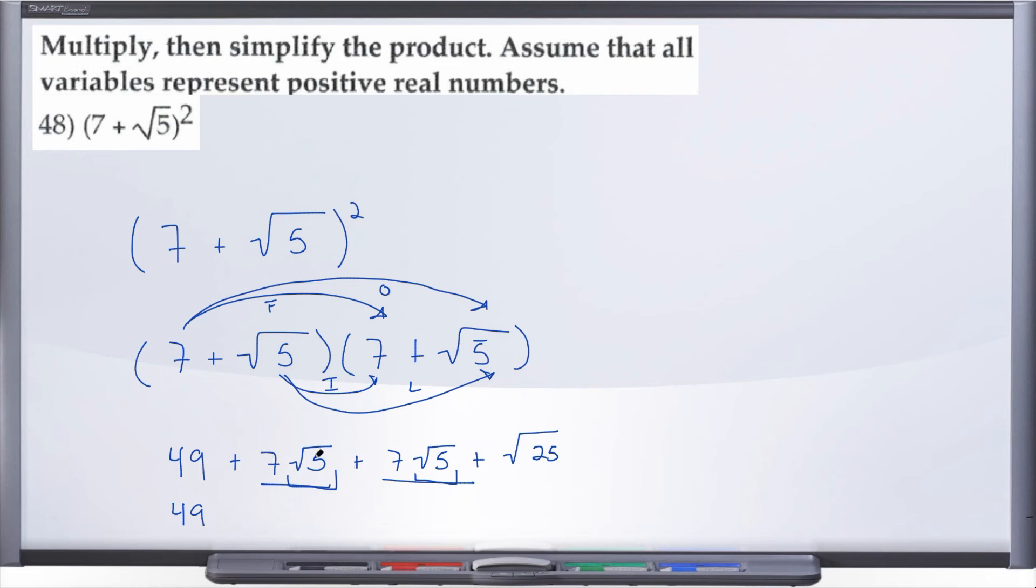So let's go ahead and add those coefficients. We have 7 plus 7, so that gives us plus 14 radical 5, and now plus, well what is radical 25? That can come out free and clean as a 5.